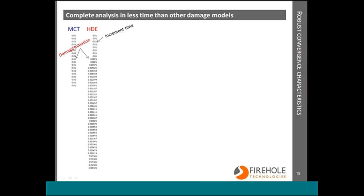The robust convergence characteristics of the intelligent discrete softening method are perhaps one of the biggest advantages of Helios MCT. On the left here I have output from a typical STA file. The Helios MCT results are under the blue, and the Hashin damage evolution run is under the red. You can see early on in the analysis the increment time is the same, but as soon as damage initiation starts, the Hashin damage evolution model requires the increment time to cut back and reduce time several times before it finds a solution. This is not required with Helios MCT.